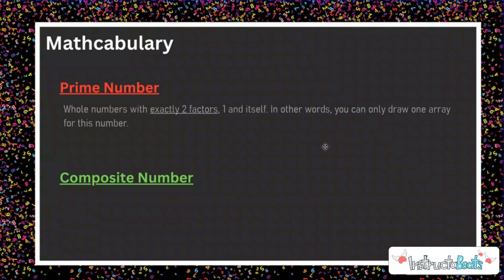A prime number is a whole number that has exactly two factors — one and itself. In other words, you can only draw one array for this number.